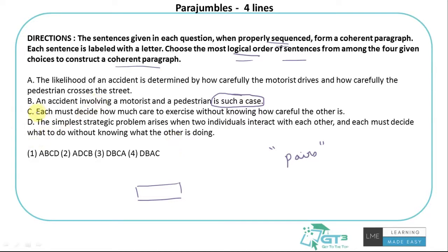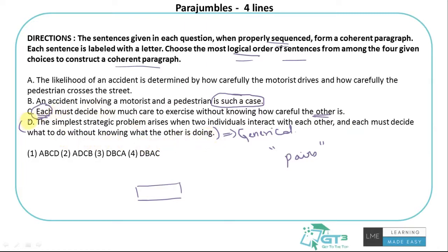Statement C: 'Each must decide how much care to exercise without knowing how careful the other is.' Words like 'each' and 'other' are clues pointing to another sentence that identifies who these people are. Statement D: 'The simplest strategic problem arises when two individuals interact with each other and each must decide what to do without knowing what the other is doing.' This looks like a very generic, opening statement with no unresolved references.